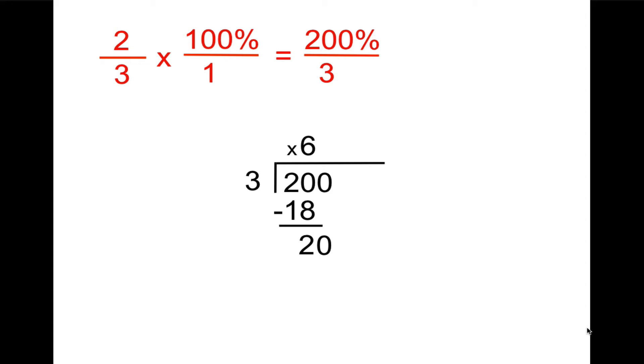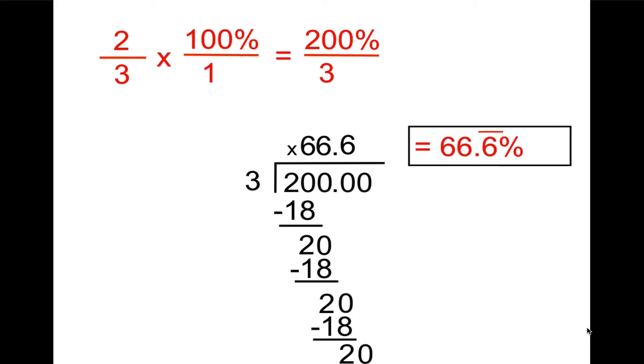Again, we have 3 going into 20, and I can see the repeating pattern. So we have 6 times 3 equals 18, and there's a remainder of 2. Put .0, bring down the 0, and 3 goes into 20 again 6 times. This is going to be a repeating decimal. So 66 and two-thirds percent, or 66.6 repeating percent.